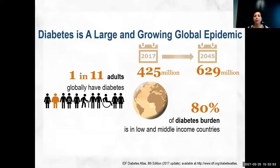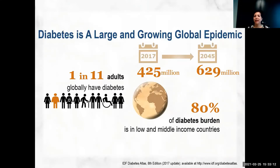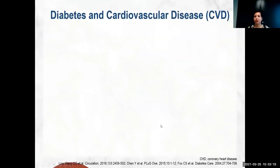So how big is the problem of diabetes? Globally, one in 11 adults has diabetes — if there are 11 people on this call, one of us would be diabetic. The number has been rapidly growing and 80 percent of diabetics will live in low and middle income countries.